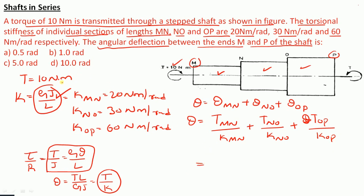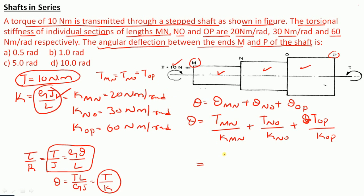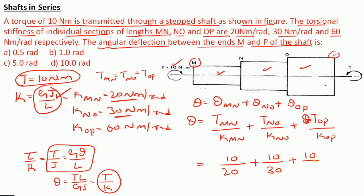The torque is given as 10 Nm. Since the shaft is in series, T_MN = T_NO = T_OP = 10 Nm. So theta = 10/20 + 10/30 + 10/60 = 0.5 + 0.333 + 0.167 = 1.0 radians.